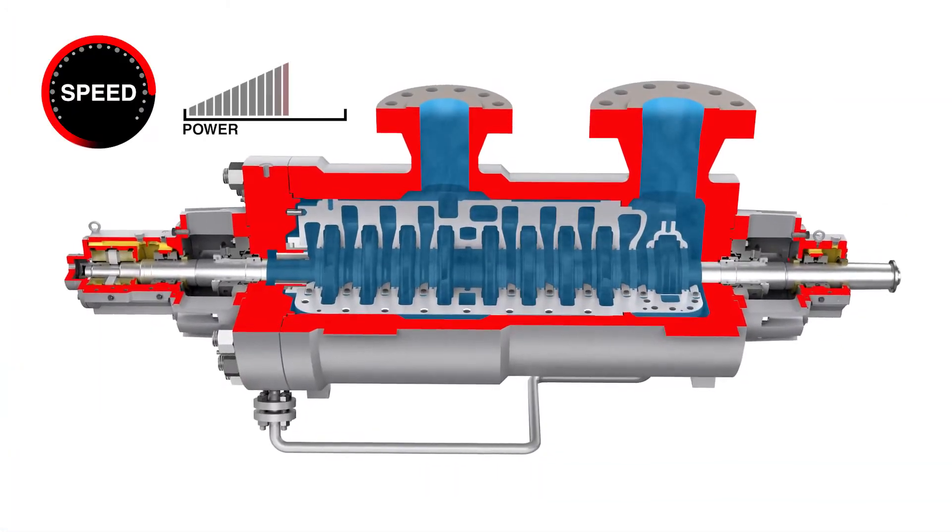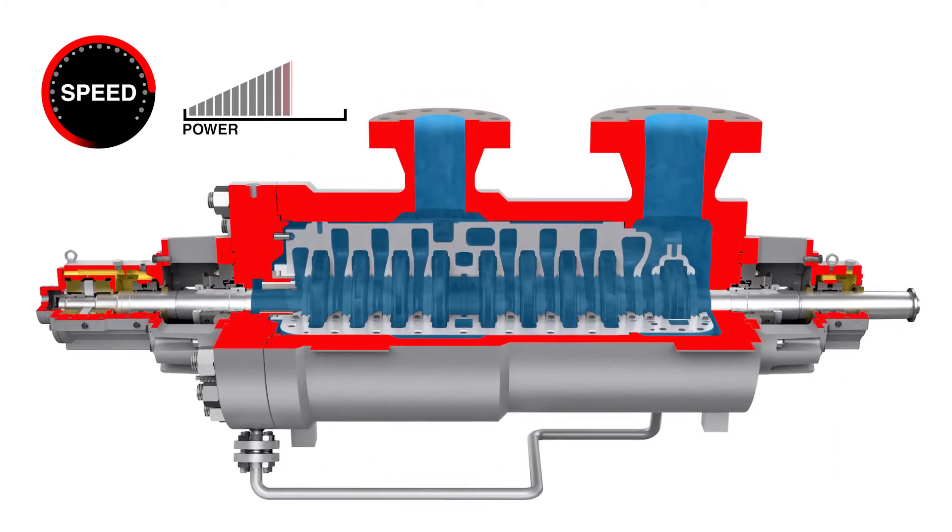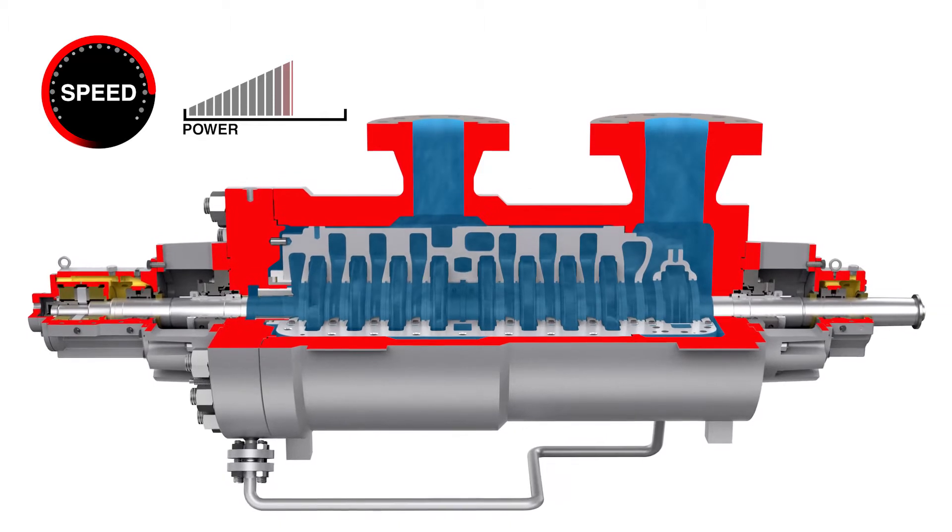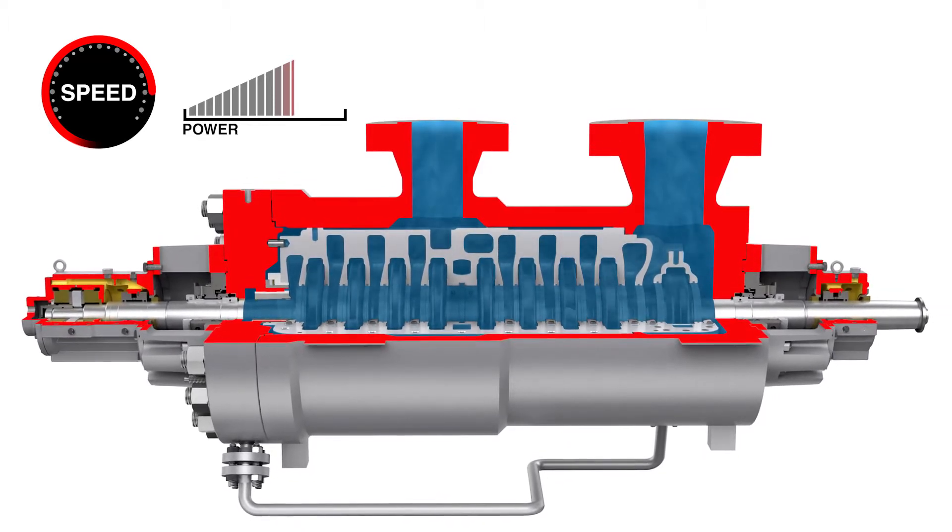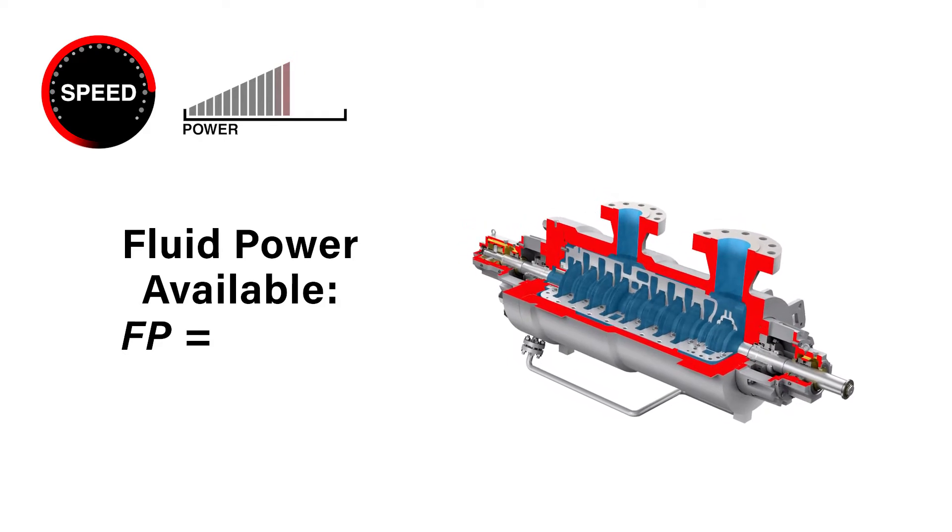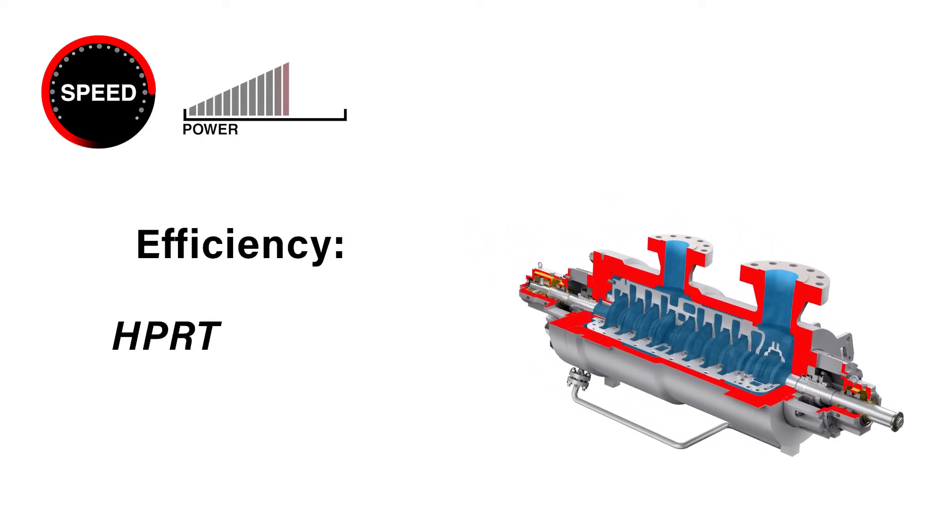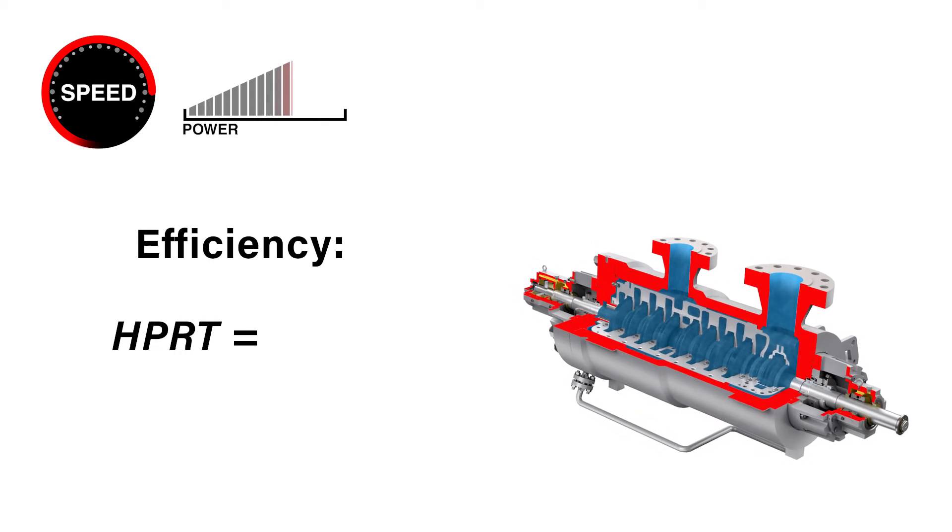To calculate an HPRT's power recovery for a single phase liquid with no evolved gas, we can use a calculation based solely on the inlet capacity and turbine pressure drop. Fluid power available is the product of mass flow, head drop, and gravity. HPRT efficiency is calculated using actual tested power output divided by the calculated fluid power available.